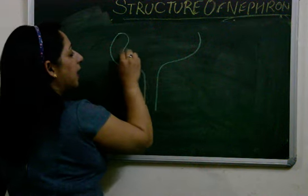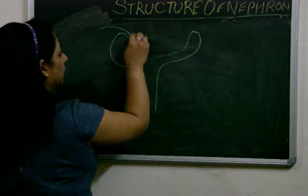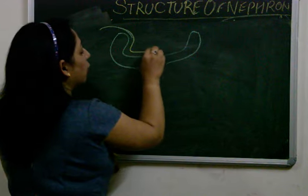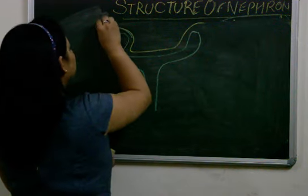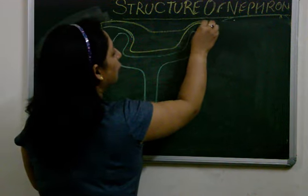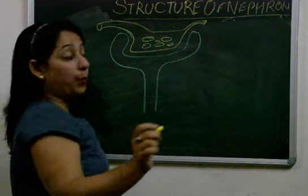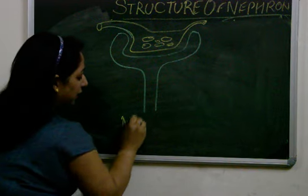This is the structure that undergoes the process of ultrafiltration, that starts the formation of urine. This is urine formation. Now this whole structure is known as malpighian capsule.